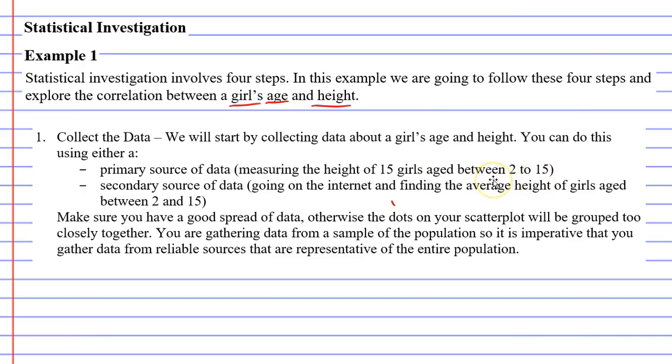So this could be family members, friends, people at your school. The second choice you have is to use what's called a secondary source of data. This is where you go on the internet where someone's already gathered this data, and you could find the average height of girls aged between 2 and 15. Now, there are a couple of things that you need to make sure that you do correctly while you gather your data.